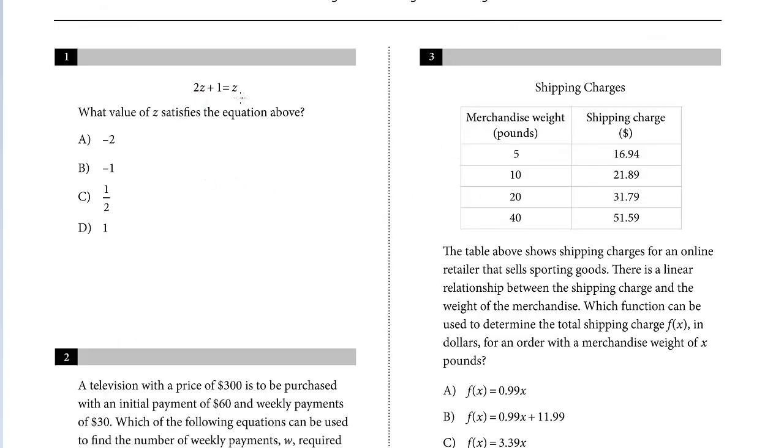2z plus 1 equals z. What value of z satisfies the equation above? Simply solve for z. We subtract z from both sides, and we get a single z on the left. Then subtract one from both sides, and that is the answer, negative one.